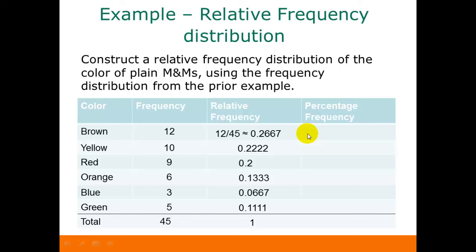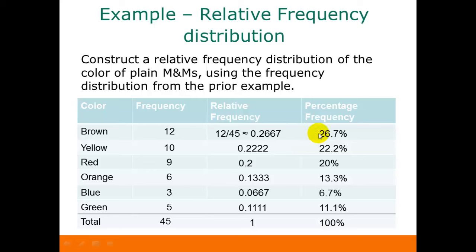To get our percentage frequencies, we take the values we got for our relative frequencies and multiply each one by 100%. How much the values are rounded depends on what you're going to do with them. In this example, I rounded the percentages to the nearest tenth of a percent. Again, you can check your answers by adding up your percentage frequencies — they should add up to 100% or something very close to it.